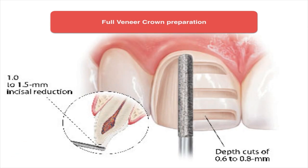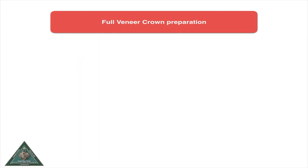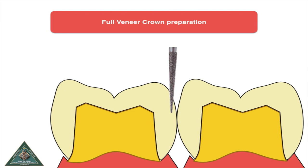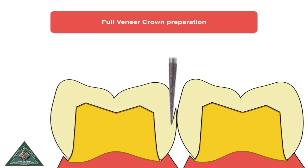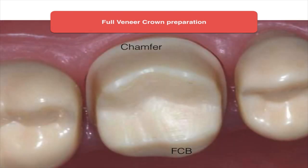For the labial side, you also want to make sure there is adequate depth orientation groove so that you don't do uneven reduction. When doing contact breaking, use a thin tapering diamond slightly away from the contact. Cut down the enamel, and once you have unsupported enamel, chisel it off with a straight chisel or a hatchet.